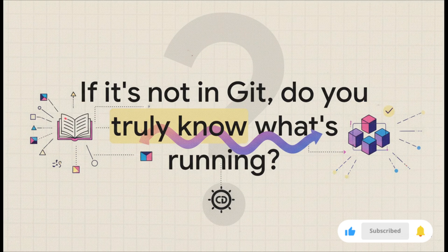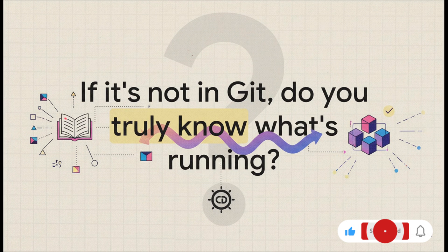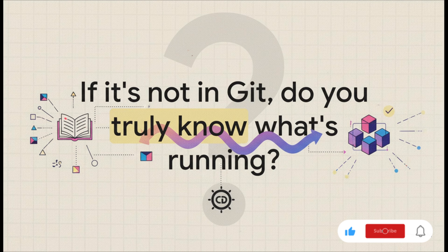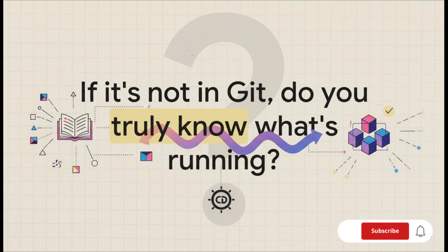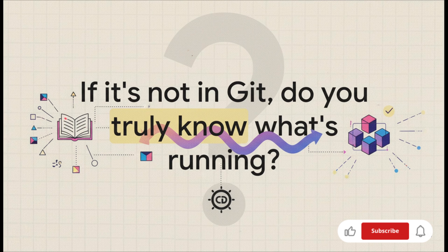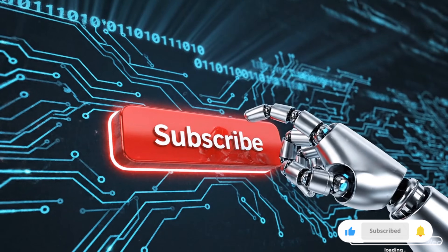If you can't look at a Git repository and know with 100% certainty that it reflects the exact state of your cluster, do you truly know what's running in production? ArgoCD is all about giving you that certainty. Thanks for tuning in.